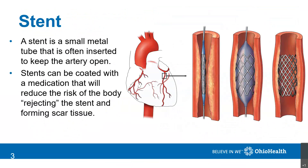Commonly, angioplasty is also done with the addition of a stent placement. A stent is a small metal tube that is wrapped around the balloon and is left in the artery when that catheter is extracted. These stents can be coated with a medication that will help prevent the body from rejecting that stent, as it is a foreign object, and will prevent it from forming scar tissue.